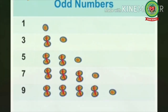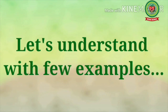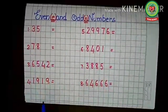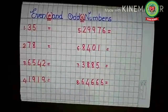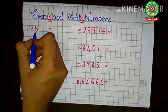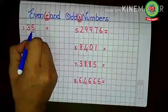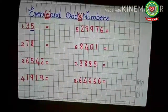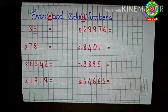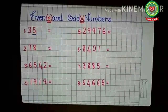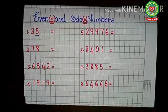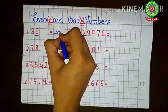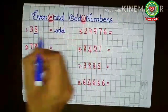Now let's understand even and odd numbers with a few examples. To see whether a number is even or odd, you just need to look at the last digit. For example, 35 — the last digit is five. We check whether five comes in the table of two: two, four, six... five does not come. So 35 is an odd number.